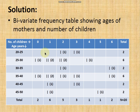You add the frequencies horizontally as well as vertically. For example: 1+1=2, 1+2+2+1=6, 1+1+2+1+1=6, 1+1=2 — the horizontal total is 20. Adding vertically: 2+6+5+3+1+1+2 also equals 20. Whether you add row-wise or column-wise, the answer should always be 20 — the total number of paired observations.